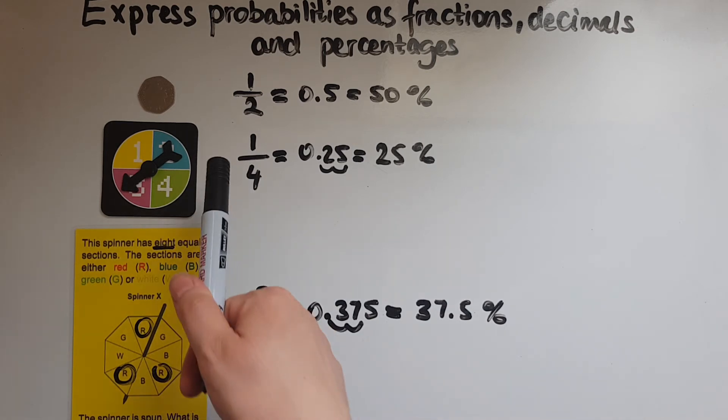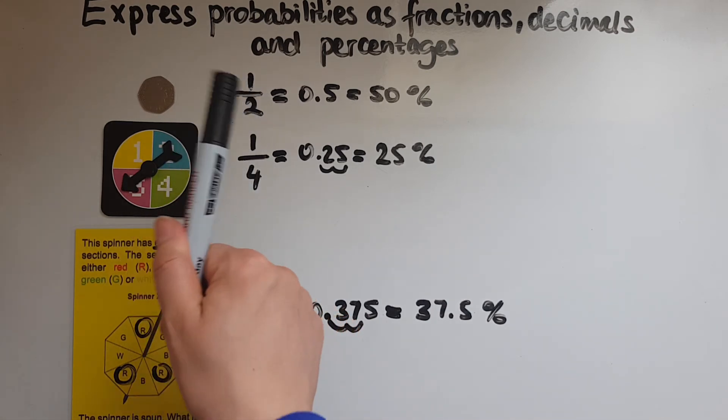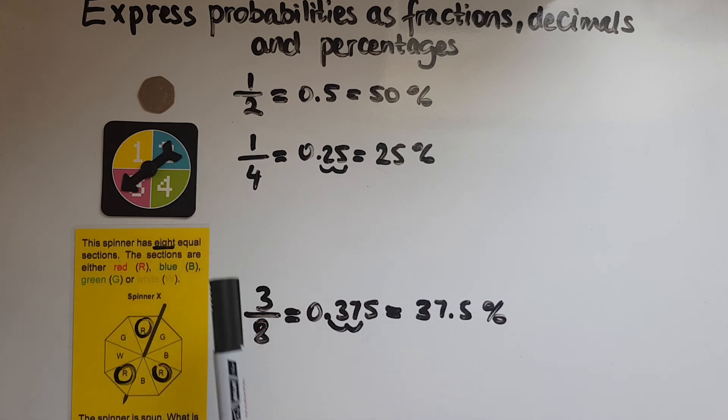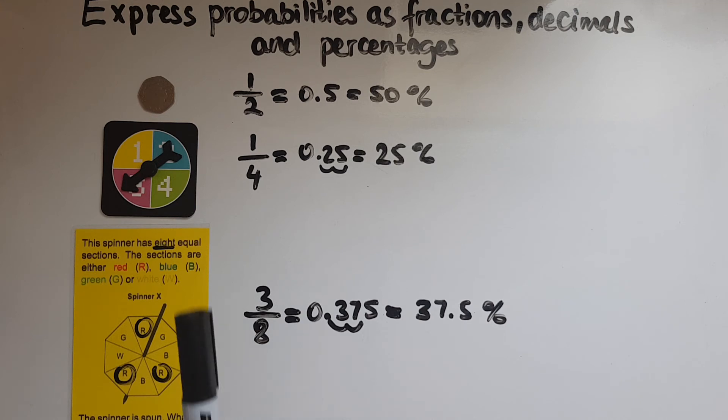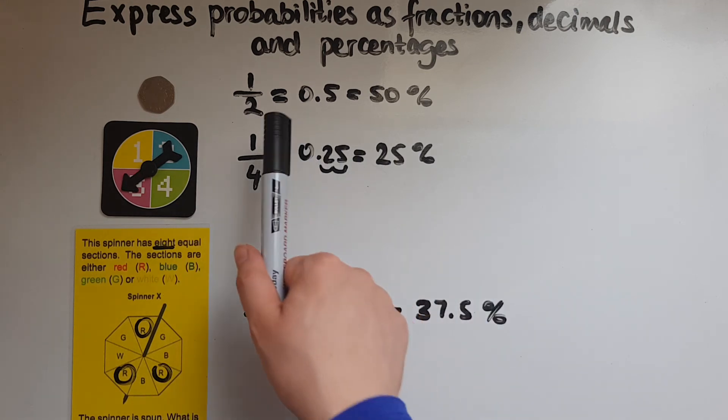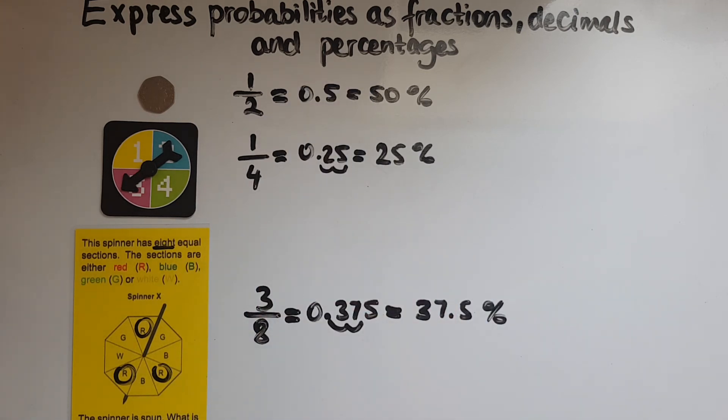The first thing to do is work out what you're finding the probability of. How many is that out of the total? And then pick it from there to express it as a decimal and then as a percentage.